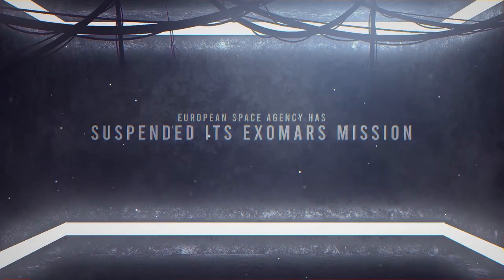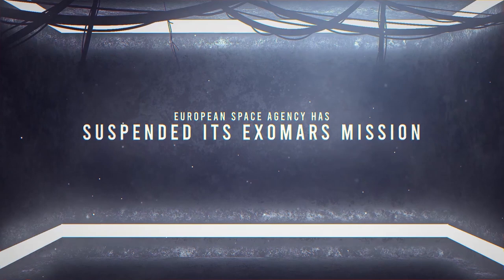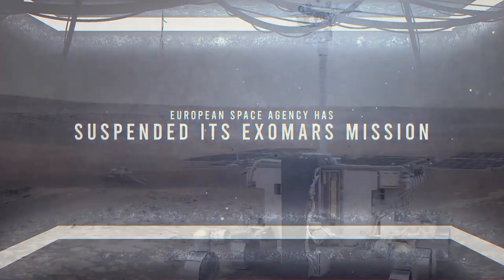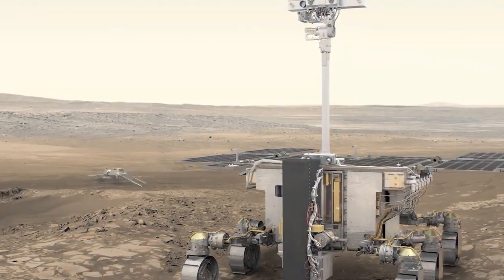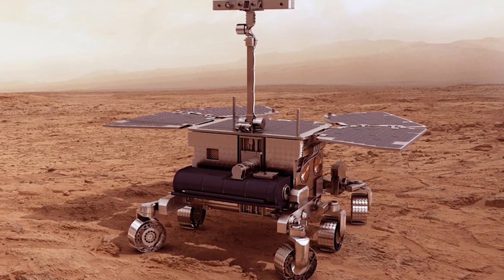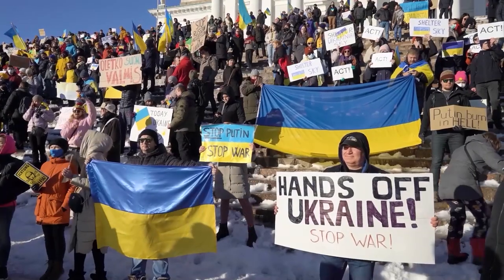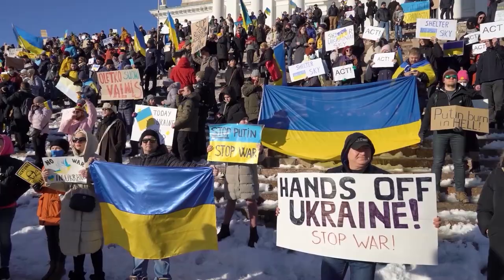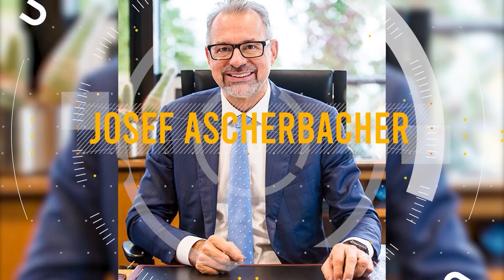The European Space Agency has suspended its ExoMars mission, a joint project with Russia that was due to launch a robotic rover. The member states of the ESA voted on Thursday to cancel the launch due to the Russian invasion of Ukraine.